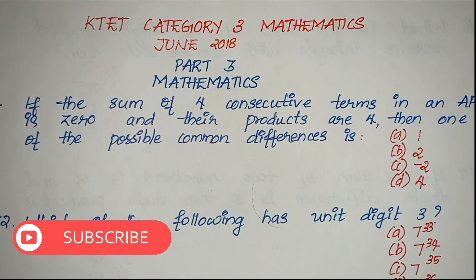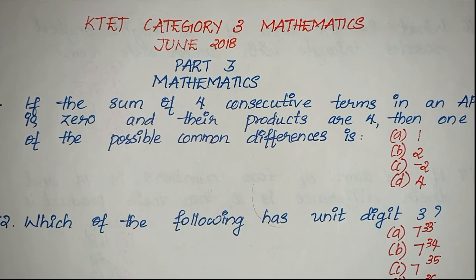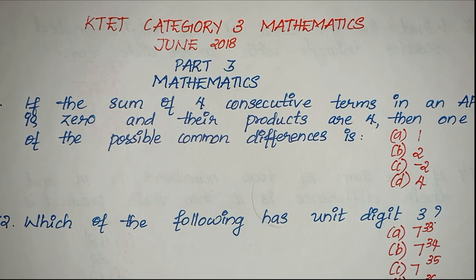Question number 71: If the sum of 4 consecutive terms in an AP is 0 and their product is 4, then find one of the possible common differences.